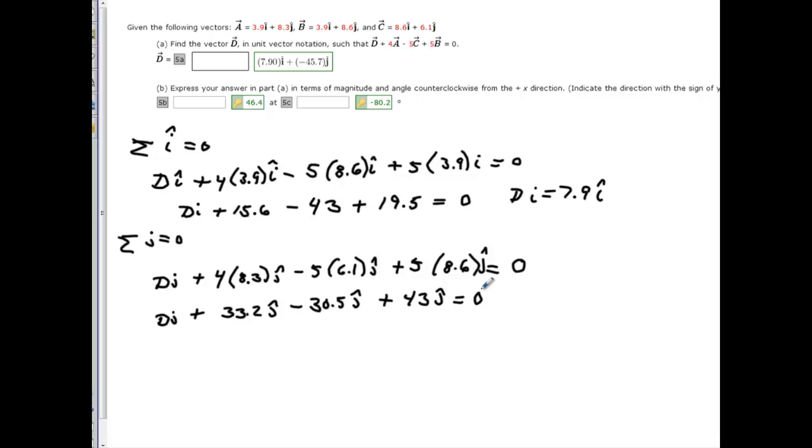33.2 minus 30.5 plus 43 gives me 45.7. So, then D I must equal to the negative 45.7 to make that go to 0. So, we got this and we got this. And you notice that matches the answer here and here.